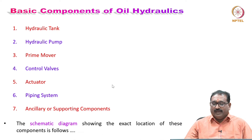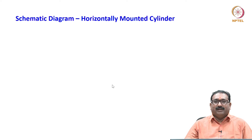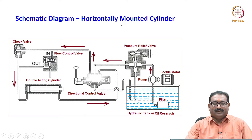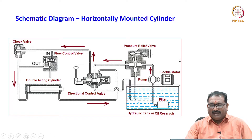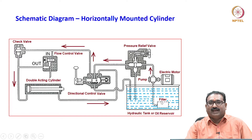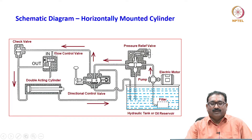The schematic diagram showing the exact location of these components is as follows. I will show you two sketches — one is a horizontally mounted cylinder. This schematic diagram shows the various components in hydraulics: hydraulic tank, also known as oil reservoir, filters, pump driven by an electric motor, pressure relief valve, direction control valves, flow control valves, check valves, and a double-acting cylinder which is the actuator.